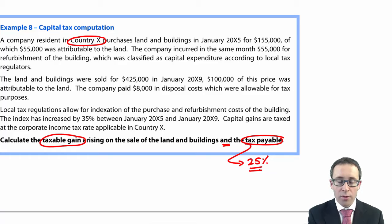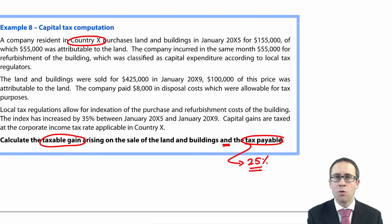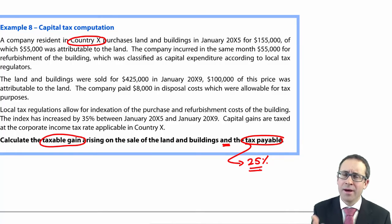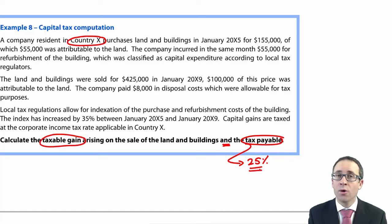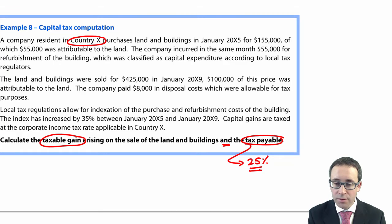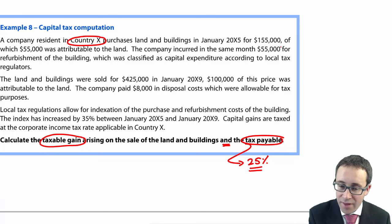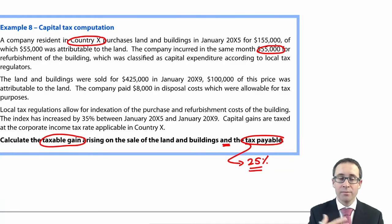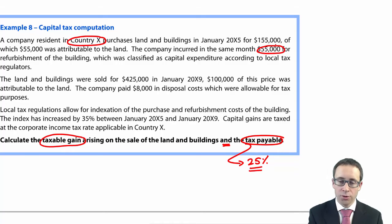A company resident in country X purchased land and buildings in January X5 for $155,000, of which $55,000 was attributable to the land. The company incurred in the same month $55,000 for the refurbishment of the building, which was classified as capital expenditure according to local tax regulators. That $55,000 is an improvement — an enhancement — so it will be an allowable cost to deduct.